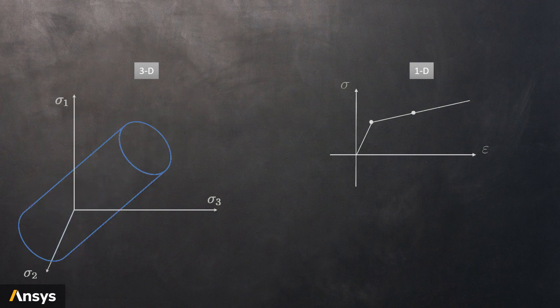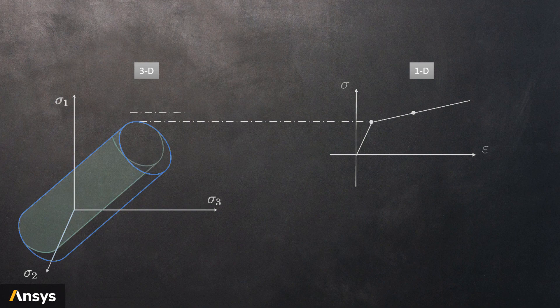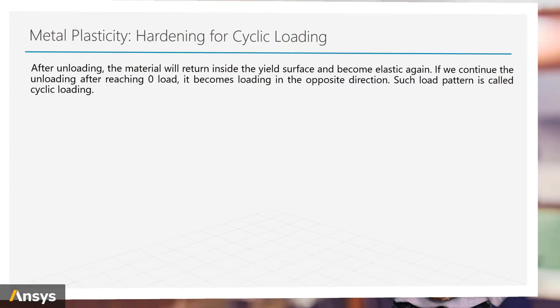For kinematic hardening, the hardening mechanism is different. Instead of expansion, the yield surface is transformed to a new location. You can see that the yield surface remains same shape and size. It's more like a rigid transformation. Now let's see what will happen if we start to unload.